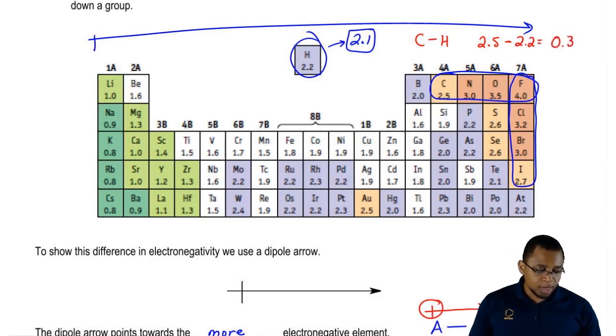Their difference would be 0.3. This is their delta EN, their difference in electronegativity.